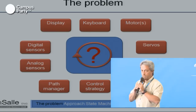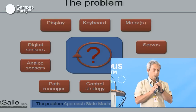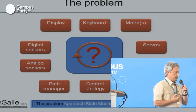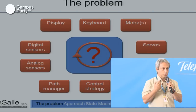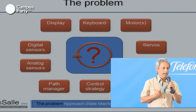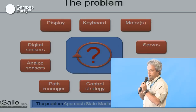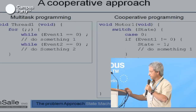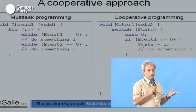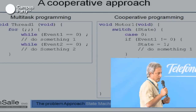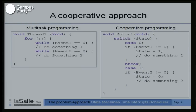But what happens when we don't have an operating system — when our microcontroller is so small that we cannot waste RAM space or processing time to run an operating system? We change our mind and switch to a cooperative approach.